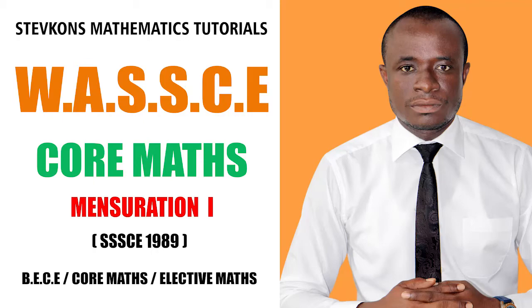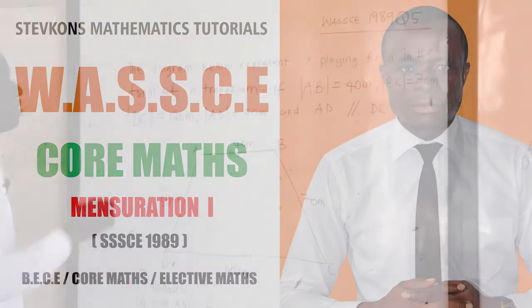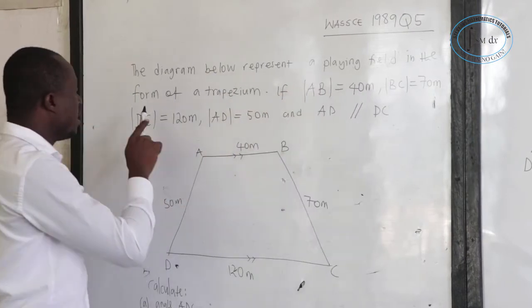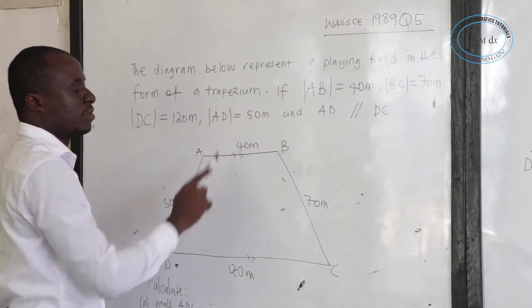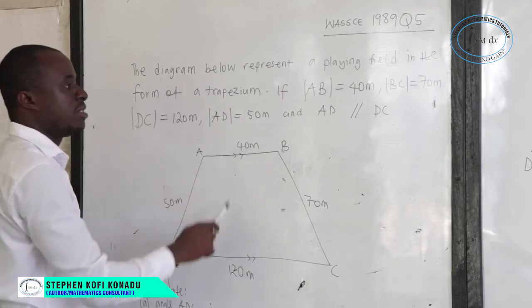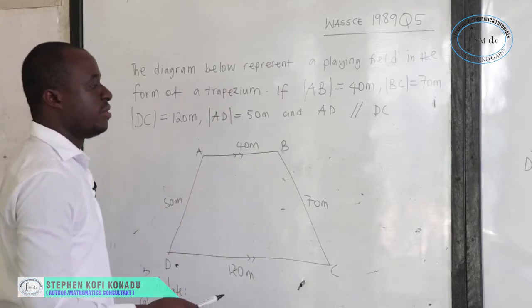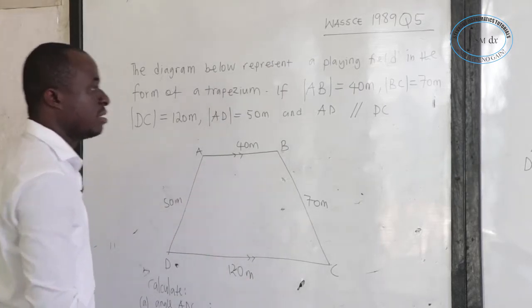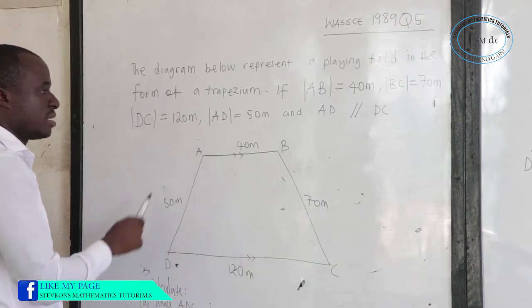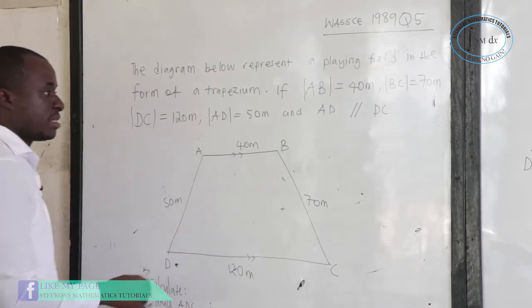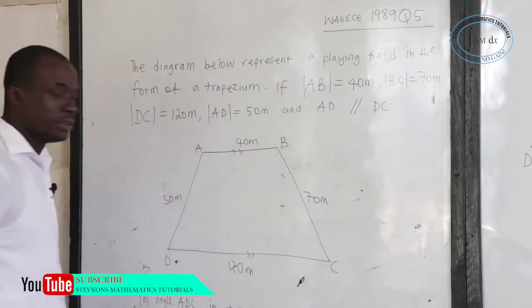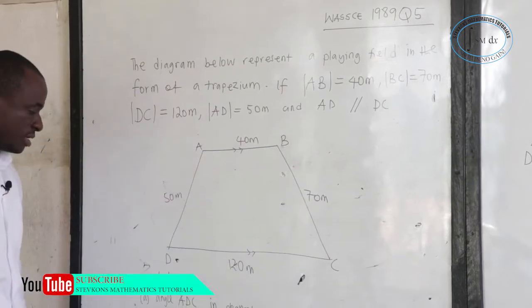This is 1985, Question number 5. The diagram below represents a plane field in the form of a trapezium. AB is 40 meters, BC is 70 meters, DC is 120 meters, AD is 50 meters, and AB is parallel to DC.